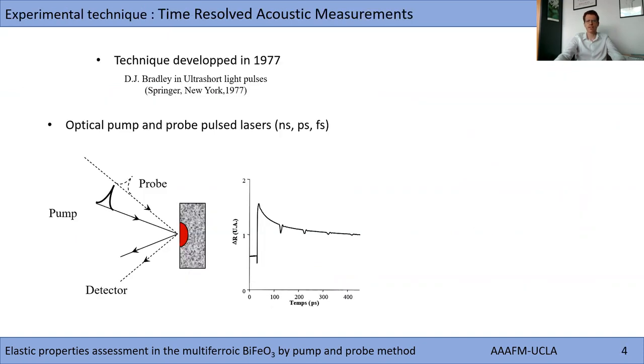To determine the elastic constants of BFO, we have used a time-resolved acoustic technique which has been developed in the 1980s. This technique has really taken off through the development of high-performing pulsed laser sources. The acoustical pump-probe technique is an optical method that generates short acoustic pulses which can be detected by a time-delayed probe. Due to the large frequency bandwidth of the acoustic pulse, it is possible to study materials at a sub-micrometer scale. This time-resolved measurement allows to measure sound velocity with an accuracy typically better than 5% and thus to determine the related elastic constants.